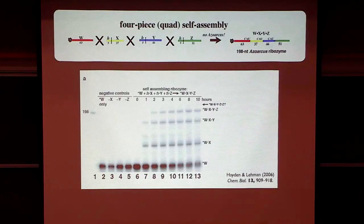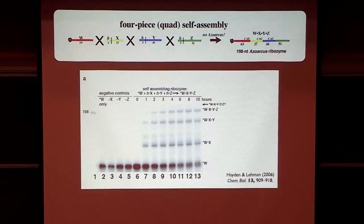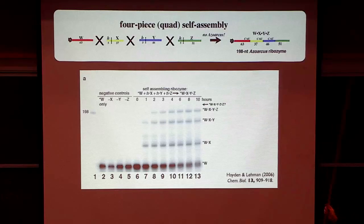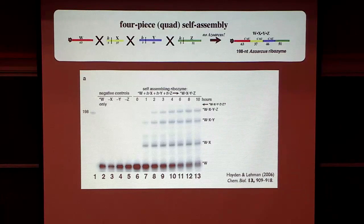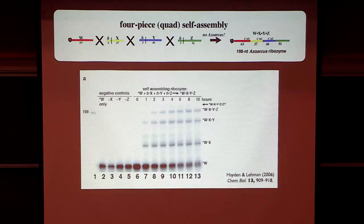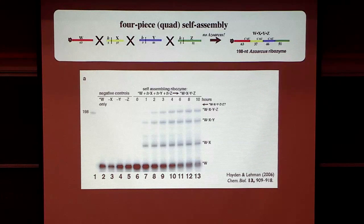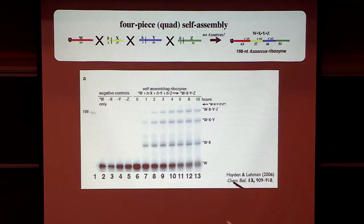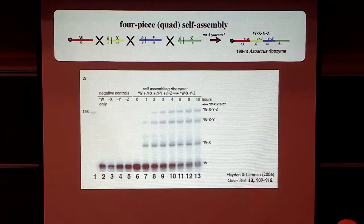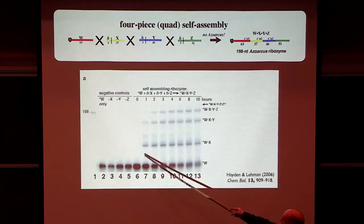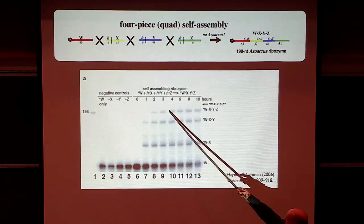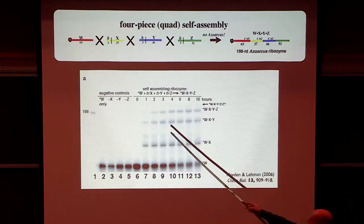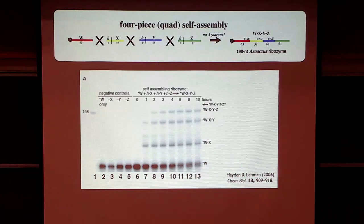So then we did the next logical thing. We broke it into more pieces. We broke it into four pieces that we're going to call W, X, Y, and Z. Red, yellow, blue, and green. We're going to throw these in a test tube with a little bit of salt. No full-length ribozyme to be found. We're going to walk away, maybe go skiing, and come back, and watch the production of W into WX, WXY, and finally into WXYZ. If you leave out any one of the four fragments, nothing happens.